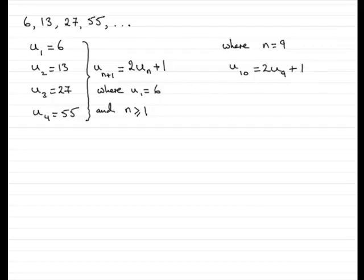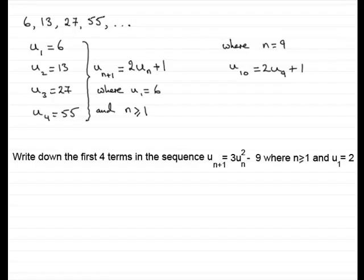So here's a question that you're likely to see, and we can use this as an example. Write down the first four terms in the sequence, and we've got where the n plus one-th term is equal to three times the nth term squared minus nine, where n is greater than or equal to one and the first term in the sequence is two.